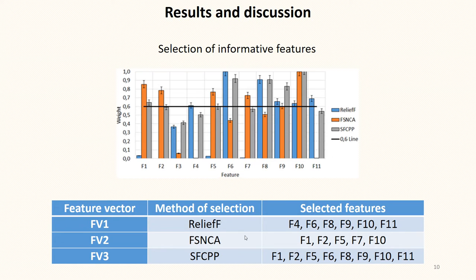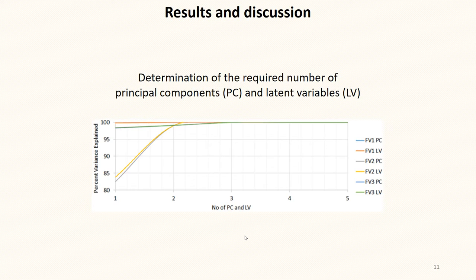The required number of principal components and latent variables to which the data in the feature vectors can be reduced are determined. The figure shows the result of this analysis. Two principal components and two latent variables are sufficient to describe more than 95% of the variance in the data. The experimental data from the feature vectors used for classification have been reduced to such an extent.